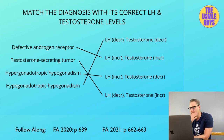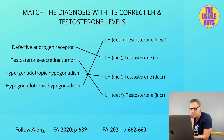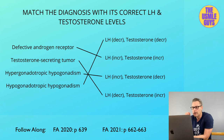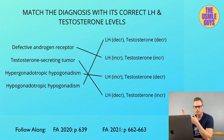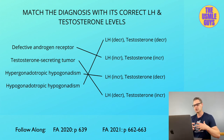In androgen insensitivity syndrome, the female-appearing patient will have external female genitalia with a blind vagina — it basically ends without leading to the cervix and uterus. The lack of uterus and fallopian tubes is caused by the constant presence of anti-Müllerian hormone from the testes. Key labs to look for: increased testosterone, increased estrogen, and increased LH. The testes should be removed because they can increase the risk of cancer.